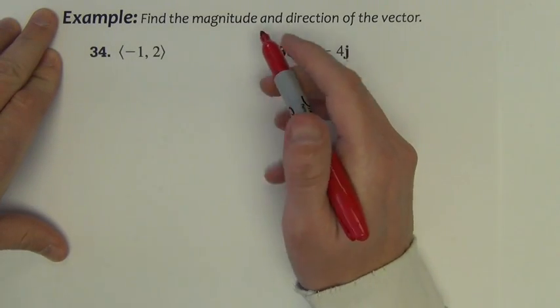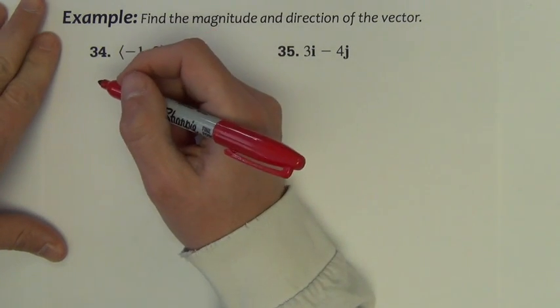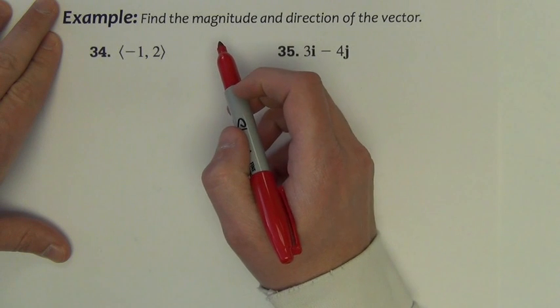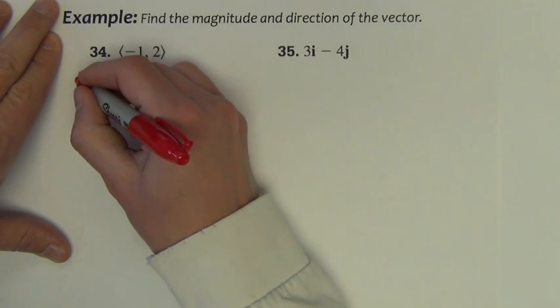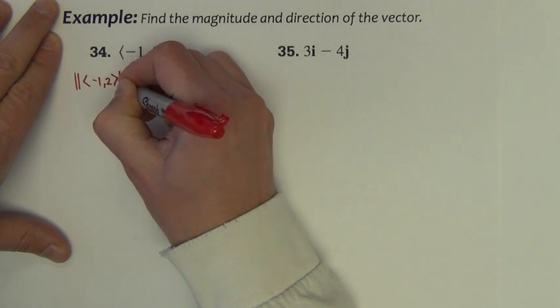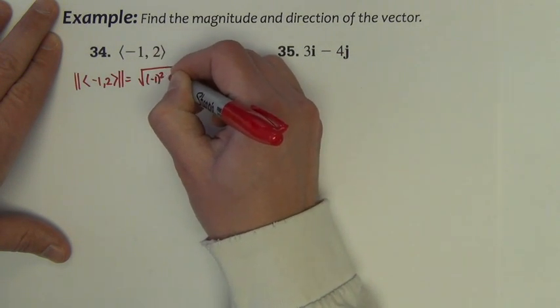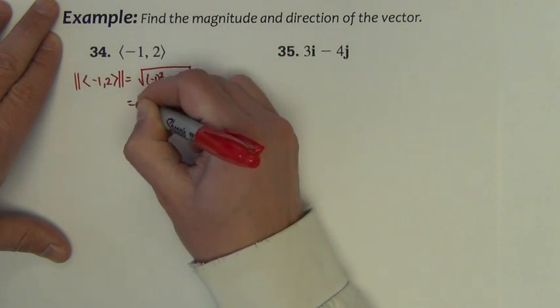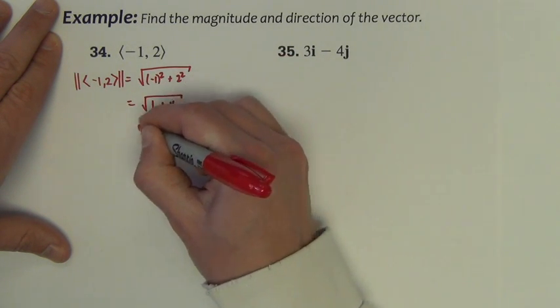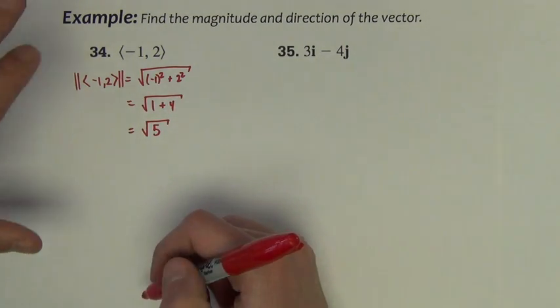Example says find the magnitude and direction of the vector. So the magnitude of the vector (-1, 2) would be the square root of (-1)² plus 2². So that is the square root of 1 plus 4, which is square root of 5. That's my magnitude.